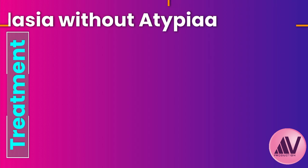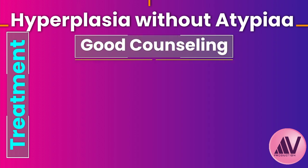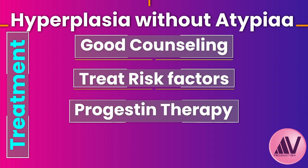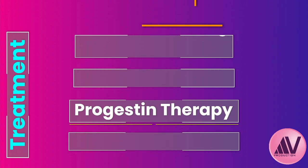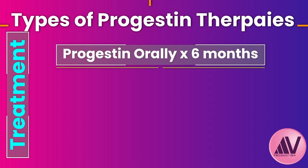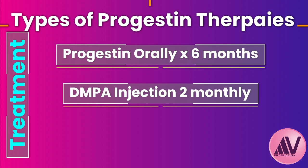For hyperplasia without atypia, the first step is counseling — reassuring the patient that cancer risk is low, it may resolve on its own, and treatment is usually effective. Addressing reversible risk factors like obesity is important. If it doesn't resolve or is causing problematic bleeding, progestogen therapy is the mainstay. Options include oral pills like medroxyprogesterone acetate or norethisterone taken daily for at least six months, and injectable forms like Depo-MPA every couple of months.